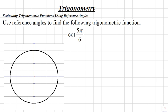Let's use reference angles to find the following trigonometric function. We're given cotangent of 5π over 6. To use reference angles to find this exact value, we'll first convert our radian measure of 5π over 6 to the degree measure. Then we'll draw our angle on the unit circle to the left and find the reference angle for it. Then we'll use the reference angle theorem to find the exact value.